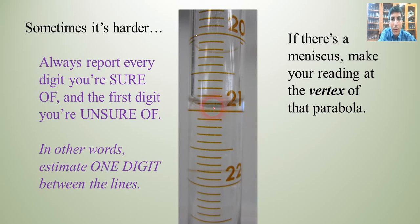So, I can tell, you know, if the bottom of that meniscus is right there, it's between 20 and 21, so it's 20 point something. I am sure of that. So, it's 20 point something. Well, it's also between the point nine and the 21 point zero, so it's 20 point nine something. I'm sure of that much.